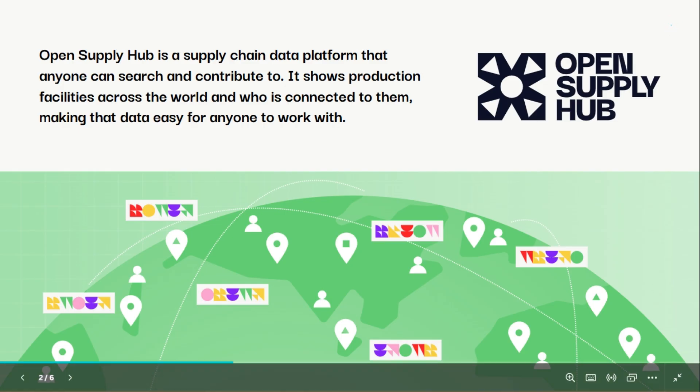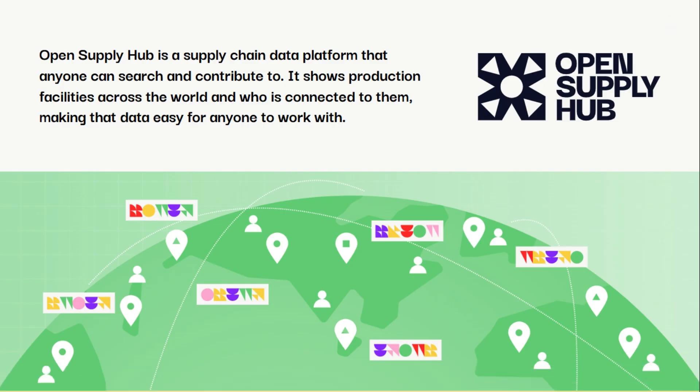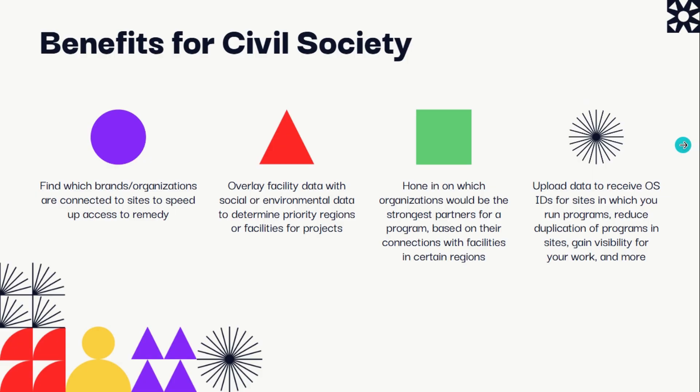What is Open Supply Hub? Open Supply Hub provides universal access to a map of global production facilities and their relationships. This means you can find which brands or organizations are connected to production locations to speed up access to remedy or build collaborative initiatives.